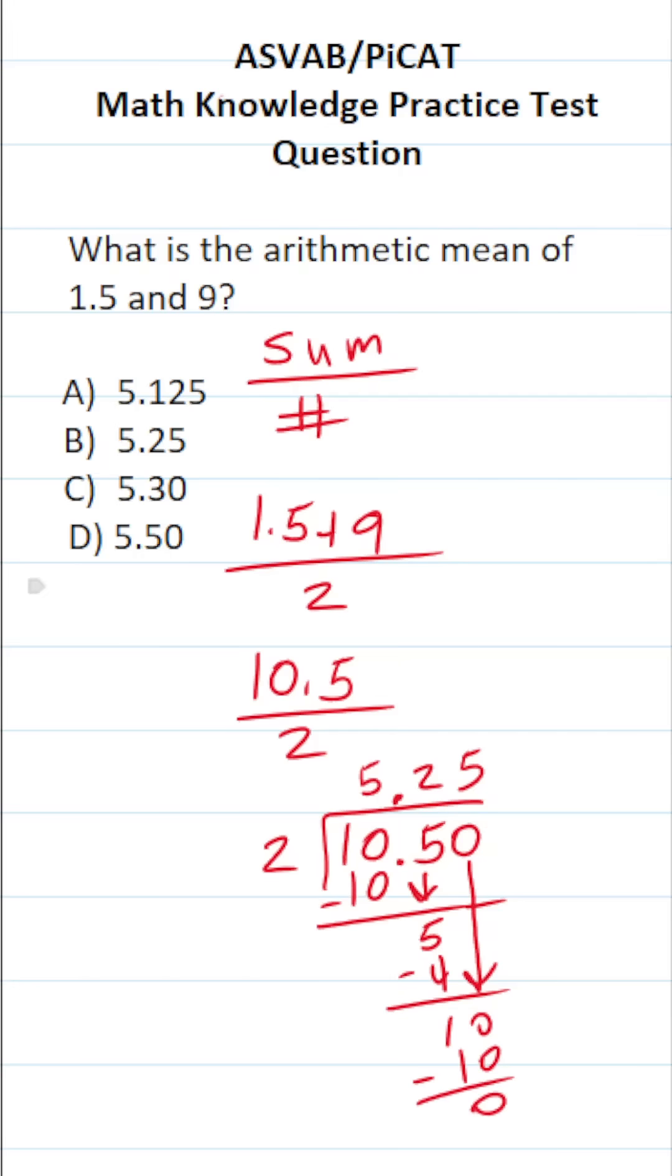So the mean of 1.5 and 9, which is the same thing as 1.5 plus 9 divided by 2, which is 10.5 divided by 2, as you can see, is 5.25. So this one is going to be B.